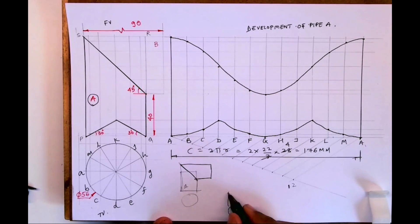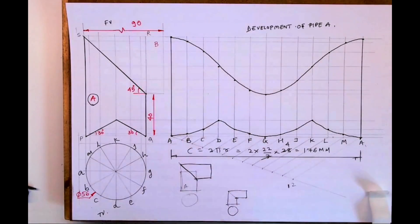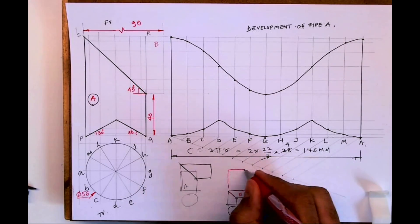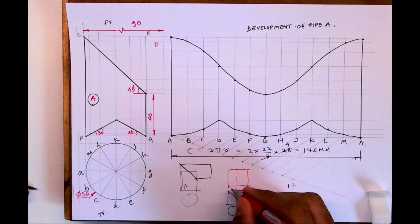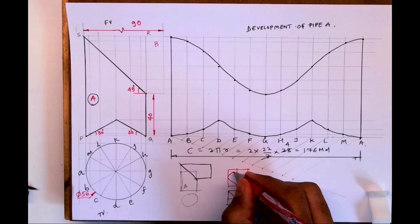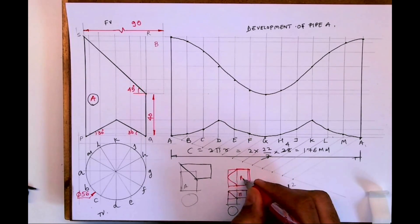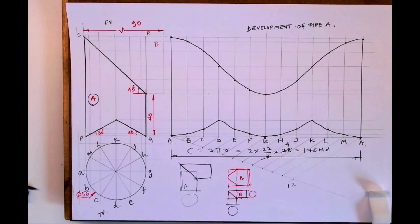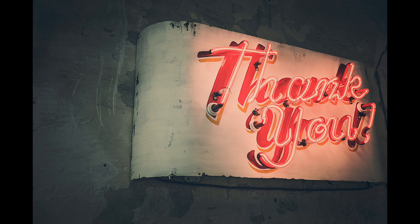So if you want to draw pipe B, let's say this is pipe B. What you will do is draw a circle over here — this is your pipe B. Then you draw a development like this, project all these points the same way, divide it into 12 parts, and you will get a curve like this. You should try this on your own and let me know. I can't do it here because my page is too small and it will go outside. I hope everyone understood this. Thank you.